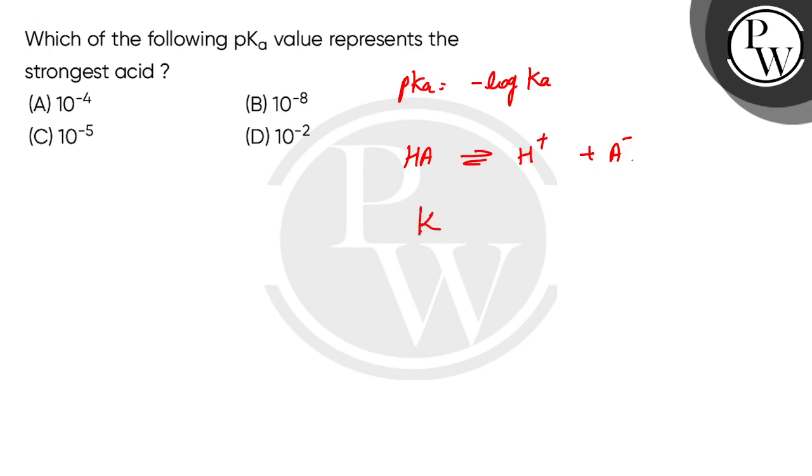Now this equilibrium is for acid and also dissociation, so specifically let's say Ka. So it is equal to concentration of H positive, concentration of A negative divided by concentration of HA. This is the equilibrium constant.